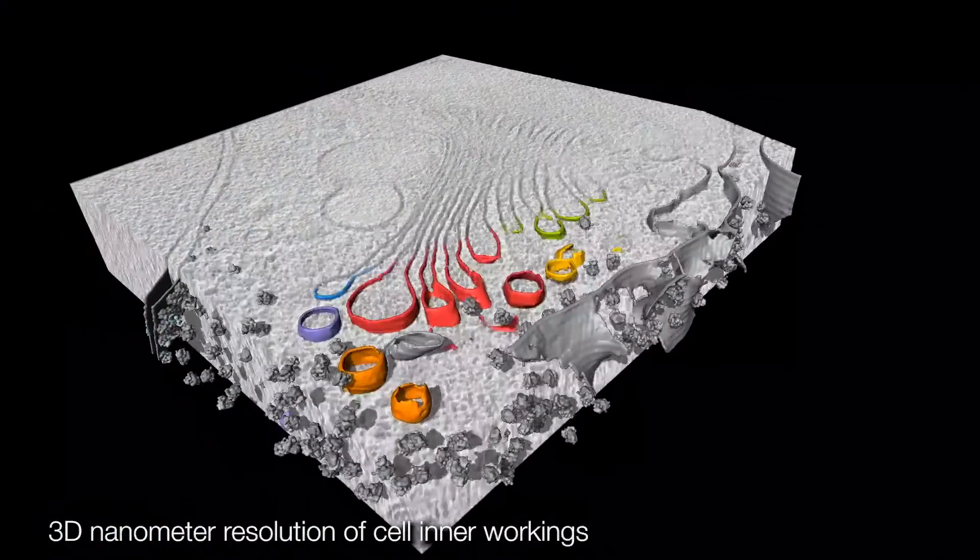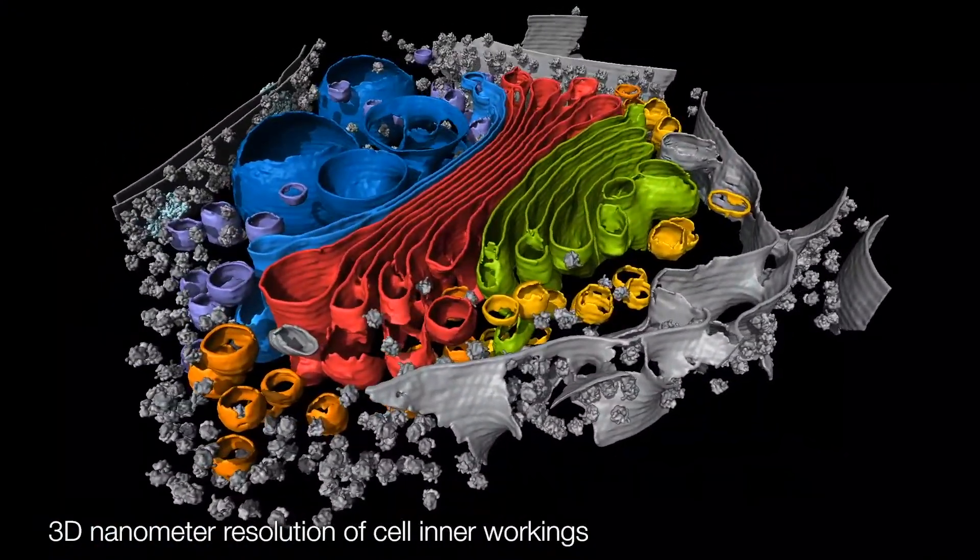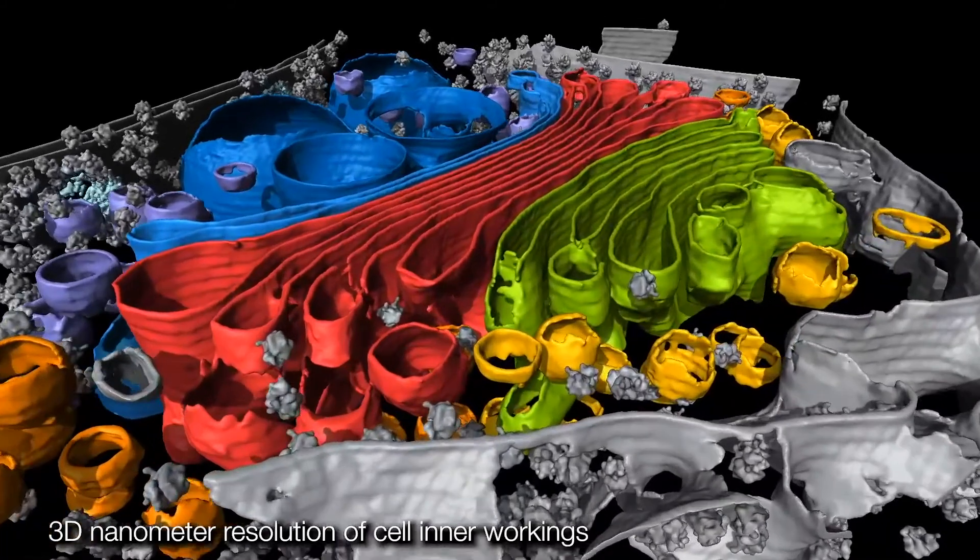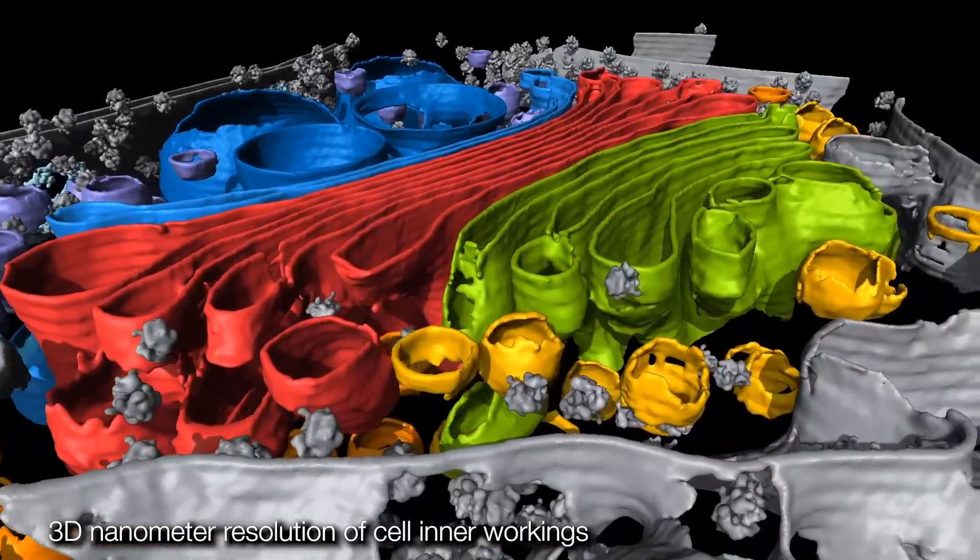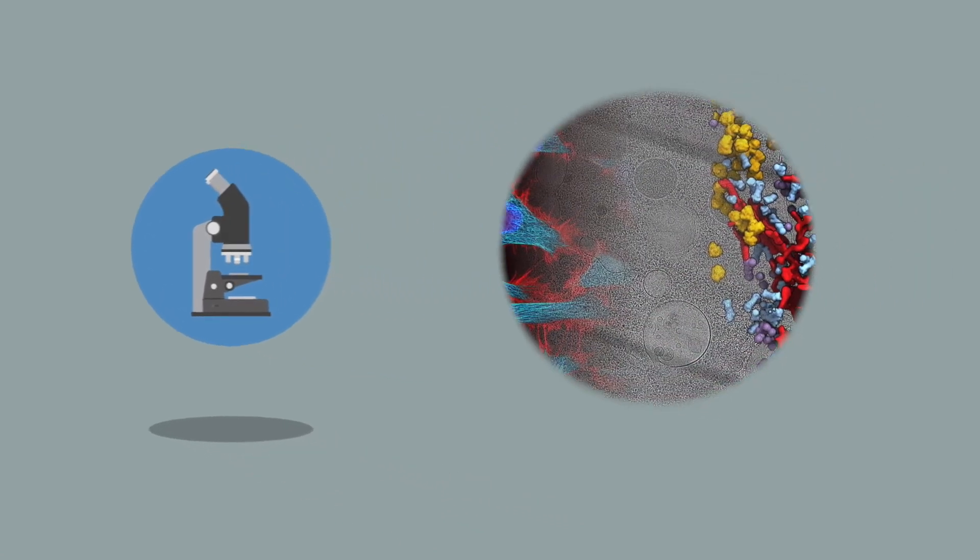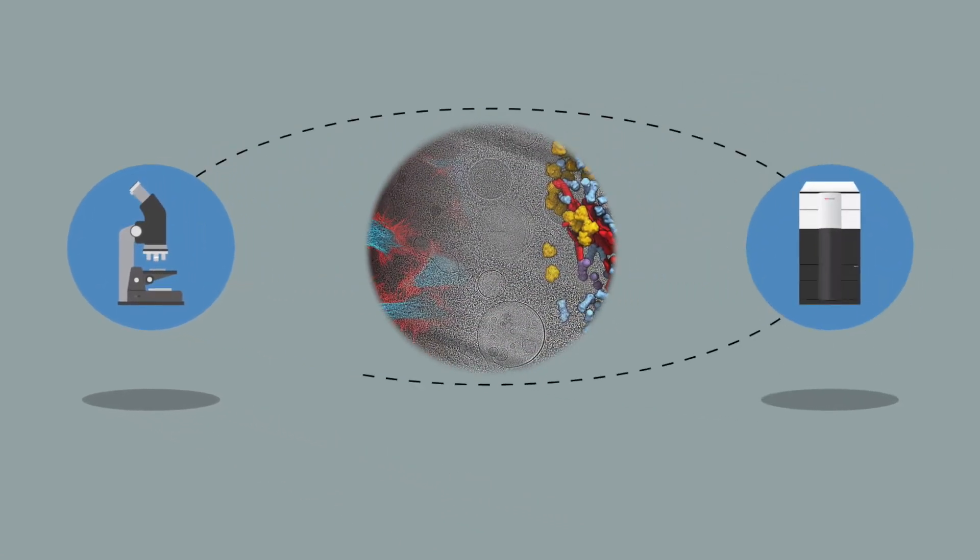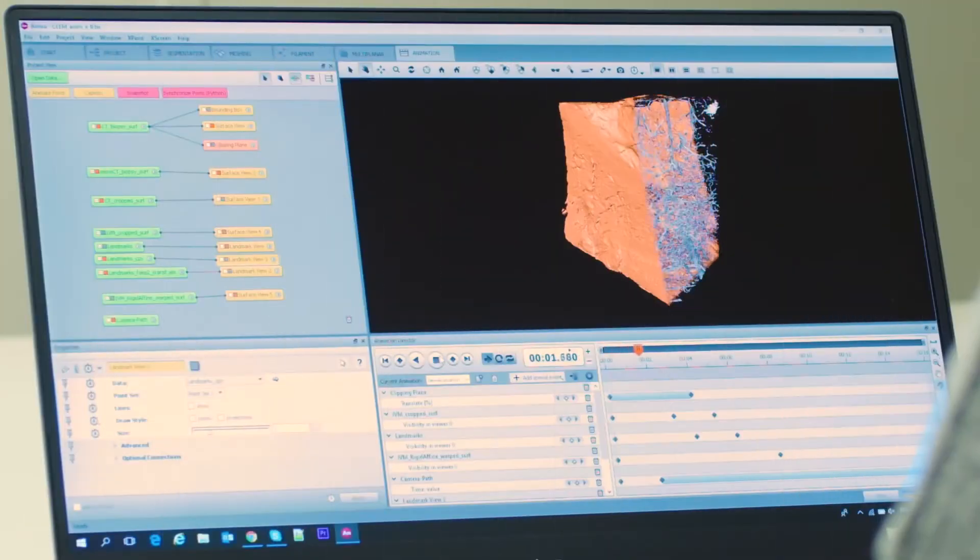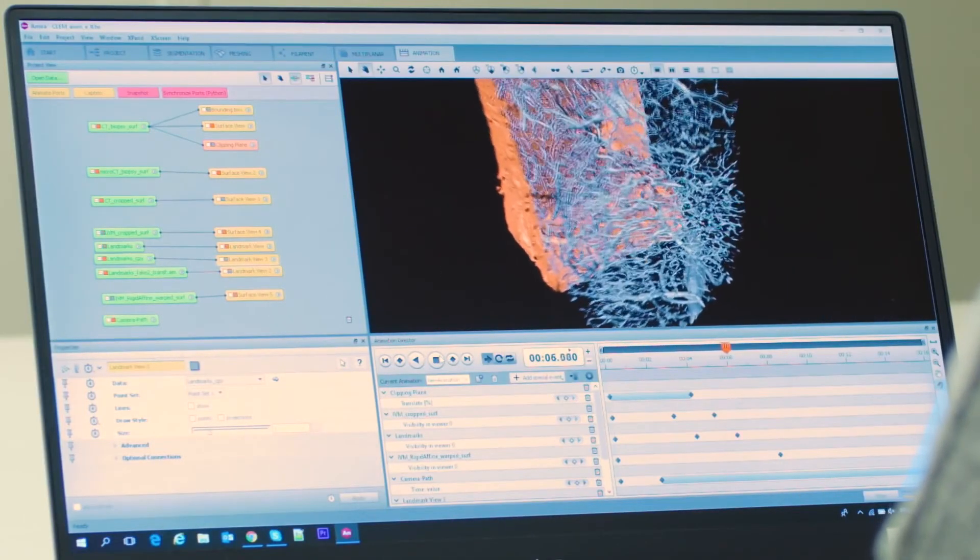We can do this because cryotomography delivers both the structural information about individual proteins and their spatial arrangements within the cell. This truly unique method bridges the gap between light microscopy and near-atomic resolution techniques, such as single particle analysis. In doing so, cryo-tomography holds enormous potential for cell biology.